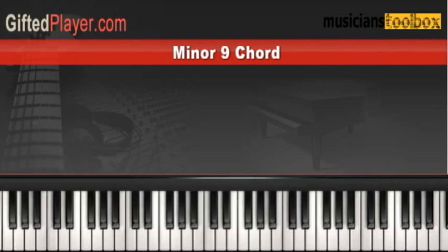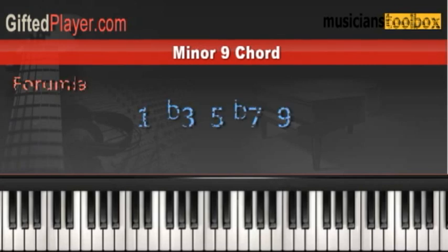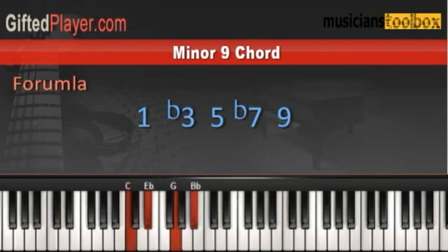So let's look at it. In the root, I'm playing a 1, which is my C. And then I'm adding a flat 3rd, a 5th, a flat 7th, and a 9th. So that's the C minor 9 chord.